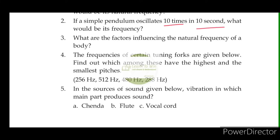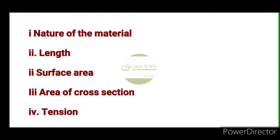What are the factors influencing the natural frequency of a body? The factors are the nature of the material, the length, surface area, area of cross section, and tension. These are the factors that affect the frequency of a body.